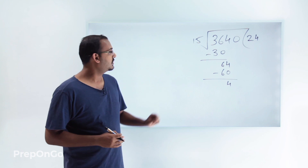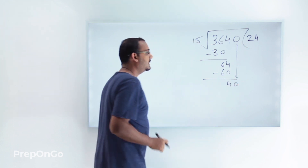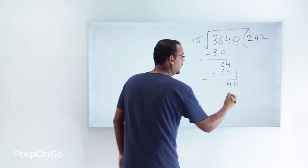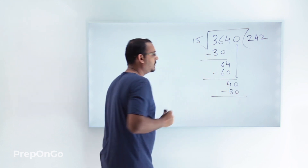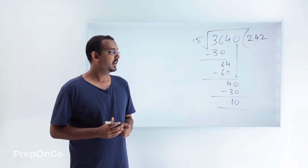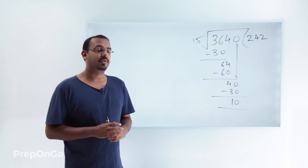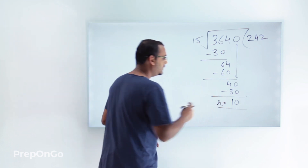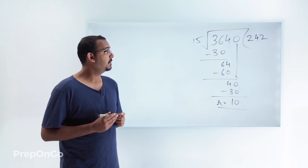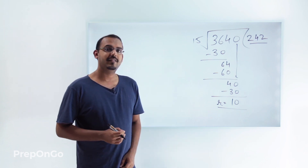Again, 15 does not go into 4, so we'll bring down the next digit from the dividend. This gives us 40. 15 goes into 40 two times to give the number 30, so when we subtract 30 from 40 we get the remainder as 10. There are no more digits in the dividend left and 10 is less than the divisor 15. So we have completed our division process. The quotient is 242 and the remainder is 10.